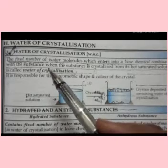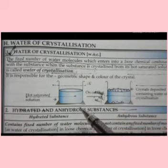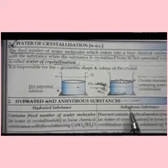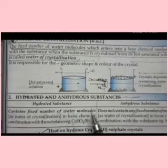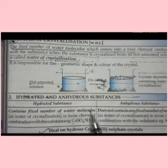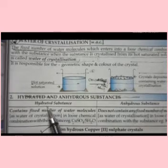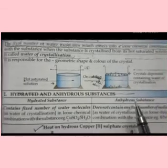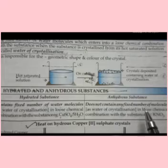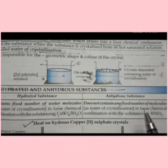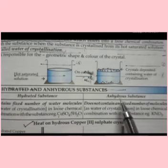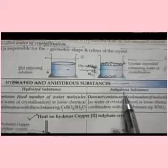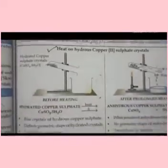On the basis of the presence of water of crystallization, substances are divided into two categories: hydrated substances and anhydrous substances. Hydrated substances contain a fixed number of water molecules in their loose chemical combination. Anhydrous substances do not contain any fixed number of water molecules in loose chemical combination with the substance.